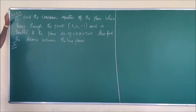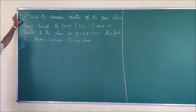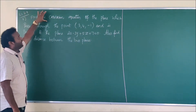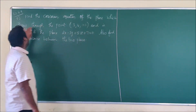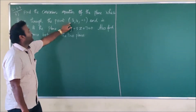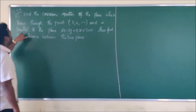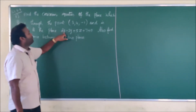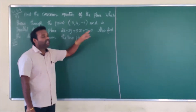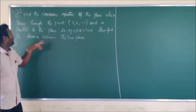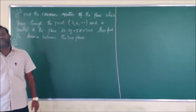In exercise 6.9, we are going to see the problem: finding the Cartesian equation of the plane which passes through the point (3, 4, -1) and is parallel to the plane 2x minus 3y plus 5z plus 7 equals 0. You also find the distance between the two planes.